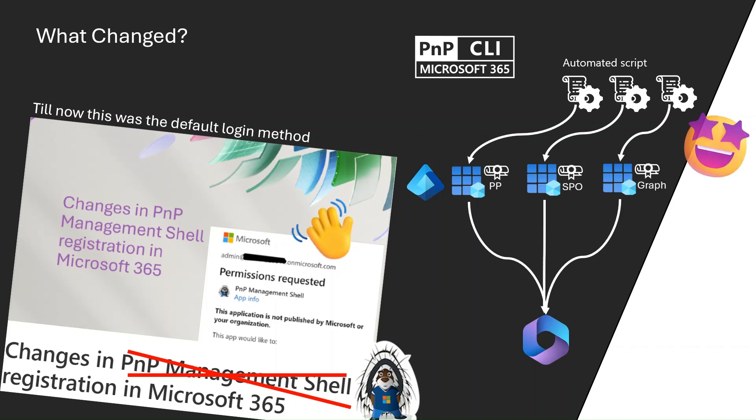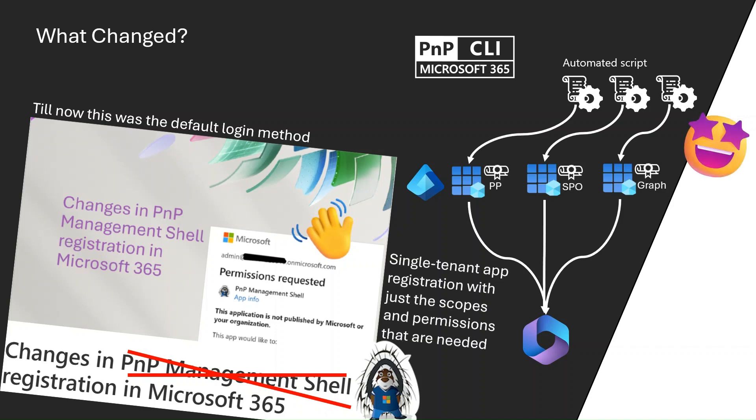For example, only the permissions allowed to make changes on the Power Platform side or SharePoint Online. That's why the PNP management shell is not here anymore. Now, before you start using CLI for Microsoft 365, you will need to create your own single-tenant app registration with just the scopes and permissions needed for either your automated script, your specific case, or to manage your Microsoft 365 tenant in the area you're interested in.